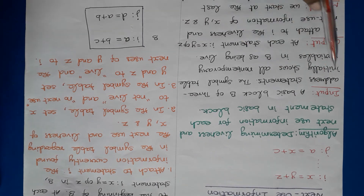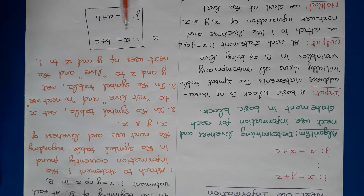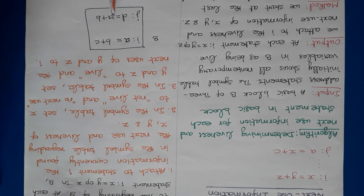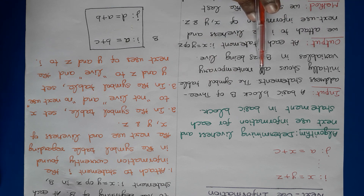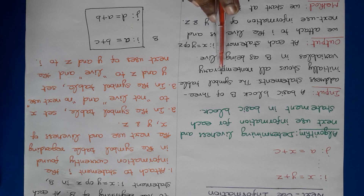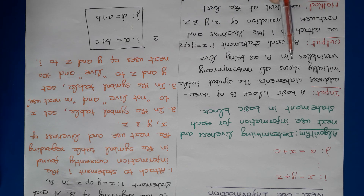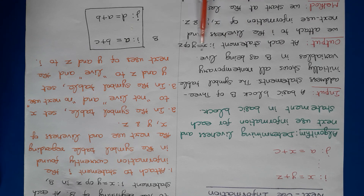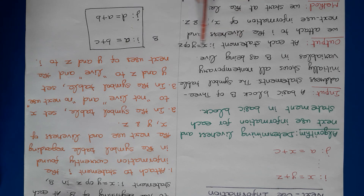For this algorithm, the input is a basic block. We consider a basic block with a list of three-address statements and assume that the symbol table initially shows all non-temporary variables in the basic block as being live. This means all variables are initially assumed as live, while temporary variables are not live.